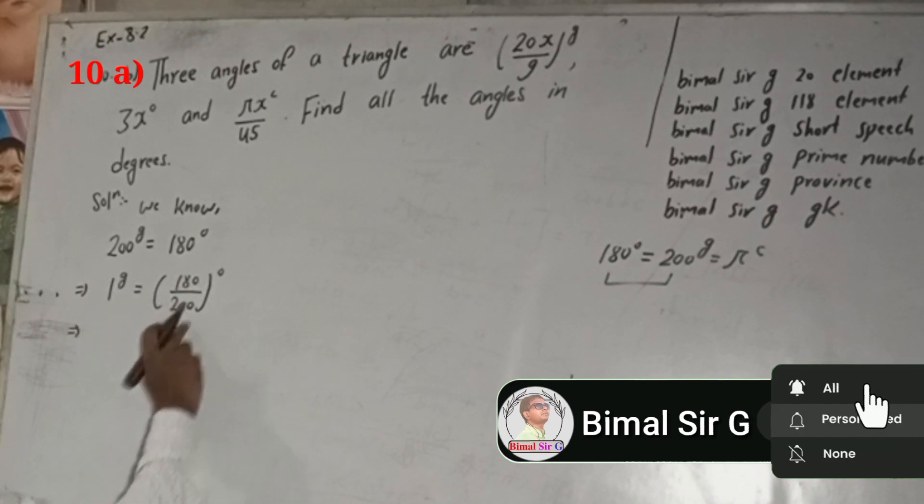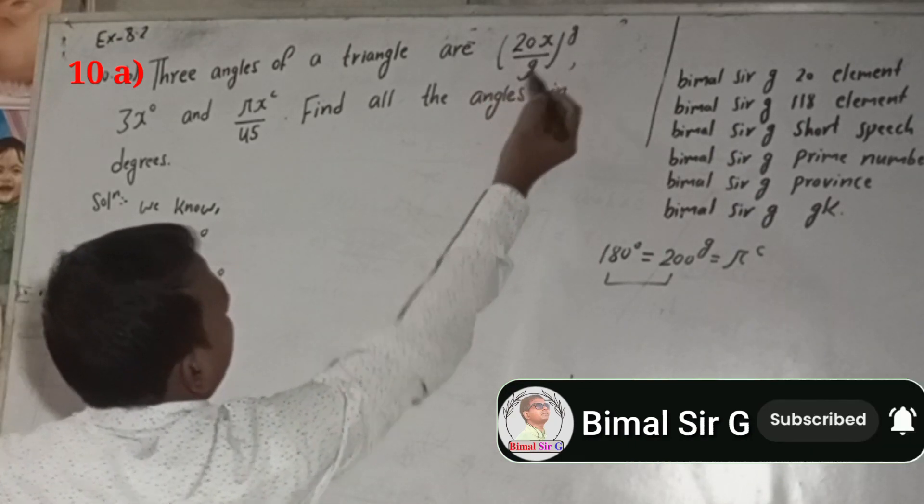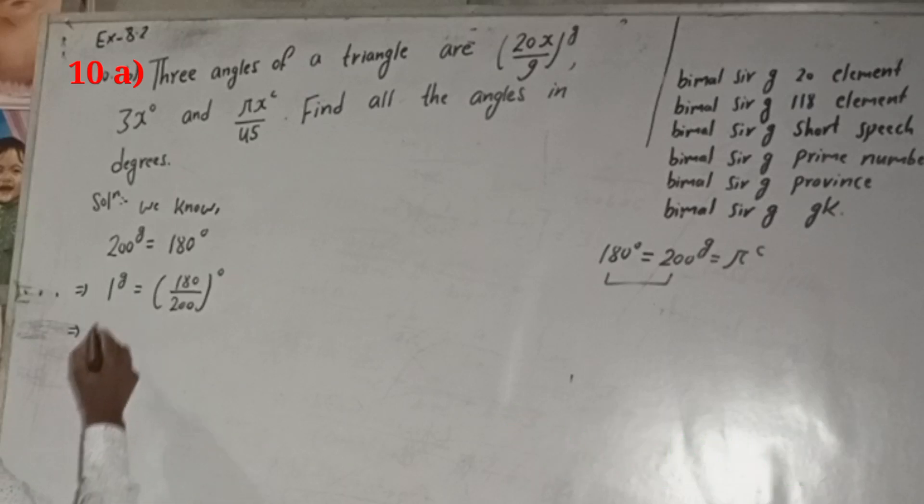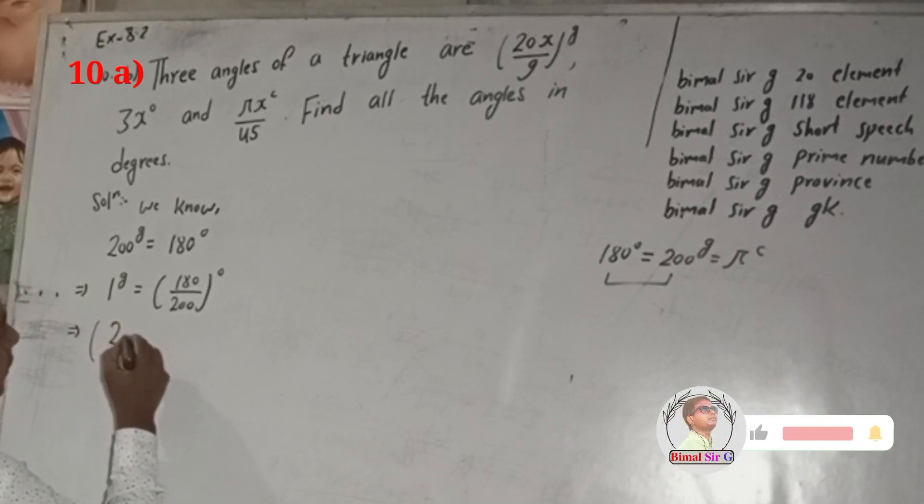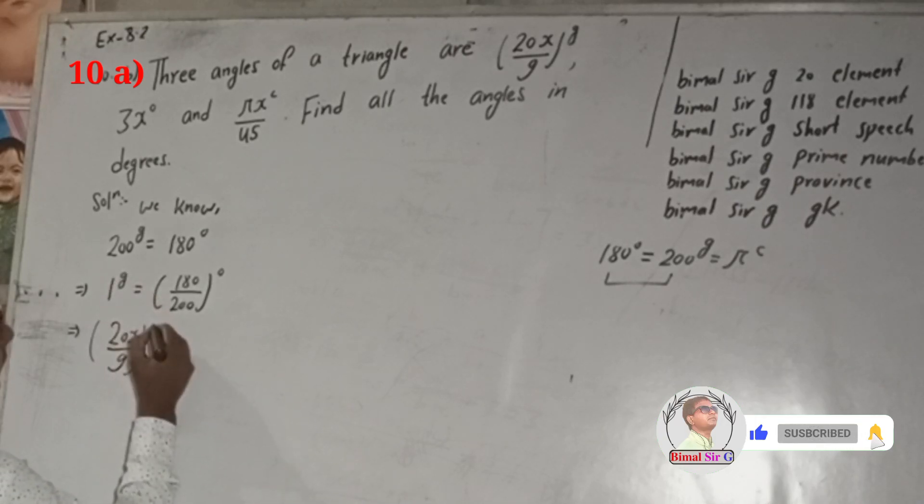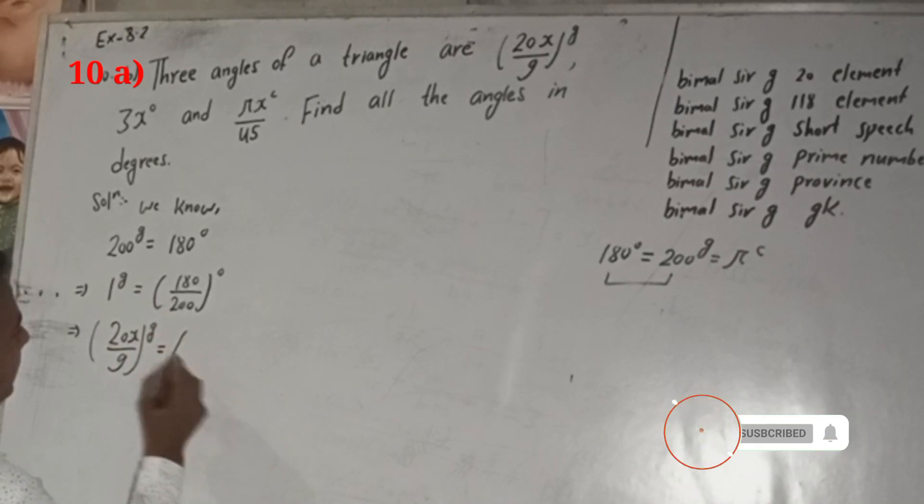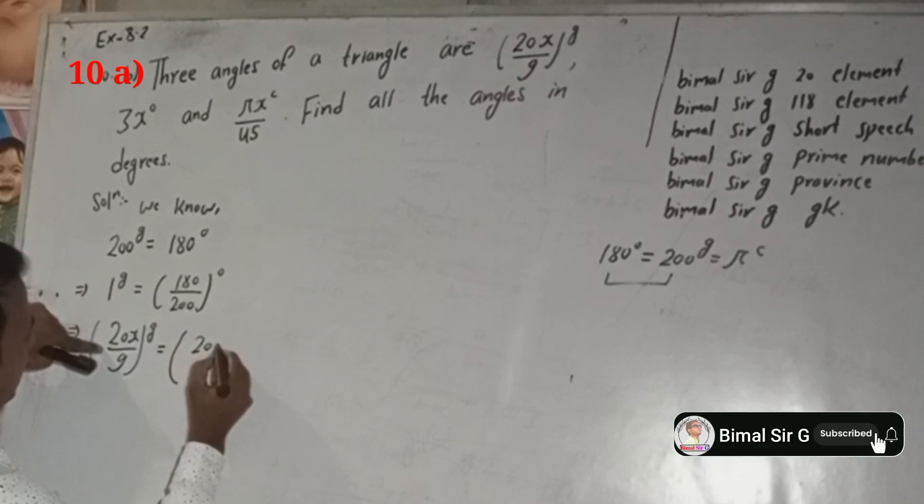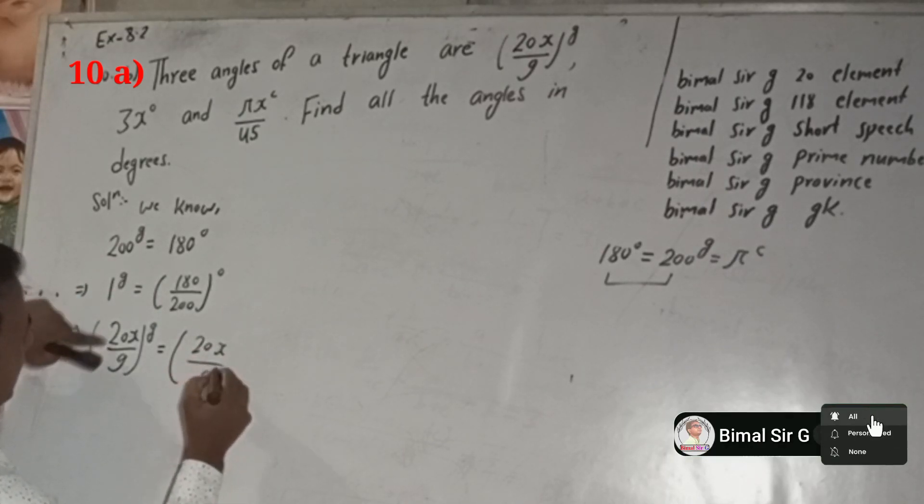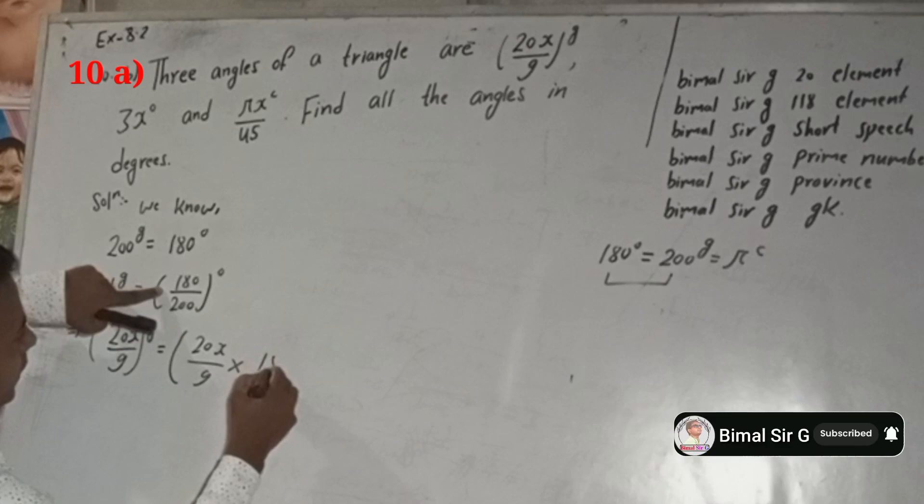So what is this 20x by 9? So we can write here, 20x/9 grade is equal to, multiply this part, so this is 20x/9 into 180/200 degree.